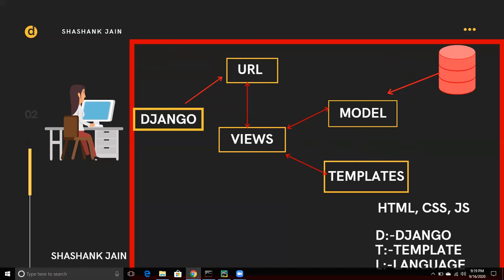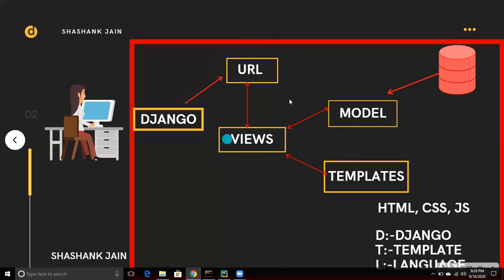To recap the Django MVT lifecycle: a user sends a request, the URL routes it to Views, Views interacts with Models to get data from the database, and passes that data to Templates to render the front-end layout of the page. That is how the Django MVT structure works.